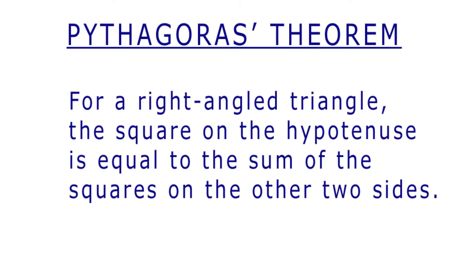The Pythagoras' Theorem states that for a right angle triangle the square on the hypotenuse is equal to the sum of the squares on the other two sides. Sounds quite a mouthful, don't you think?